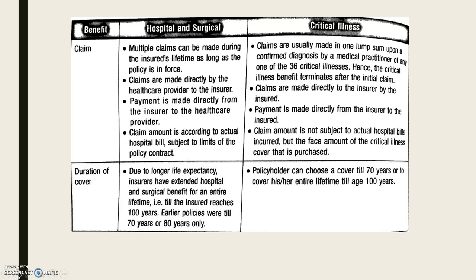Critical illness claims are made in a lump sum upon confirmed diagnosis by a medical practitioner of any one of the 36 critical illnesses. The critical illness benefit terminates after the initial claim. Claims are made directly to the insurer by the insured, and payment is made directly from the insurer to the insured. The claim amount is not subject to the actual hospital bills incurred, but is based on the face amount of the critical illness cover that was purchased.